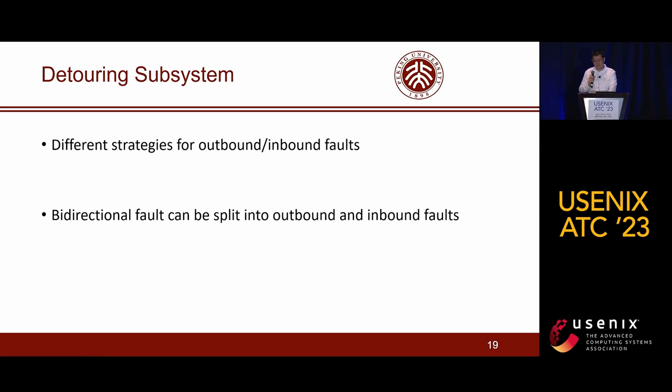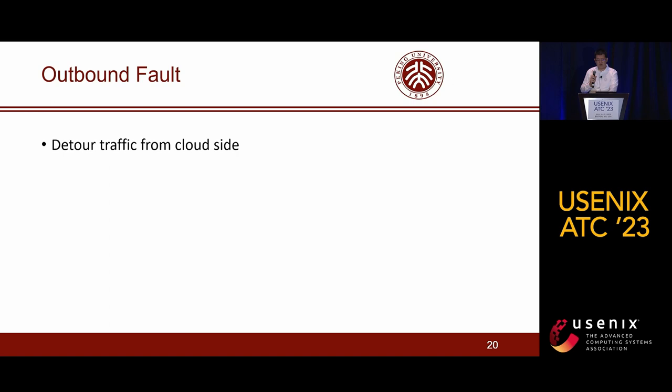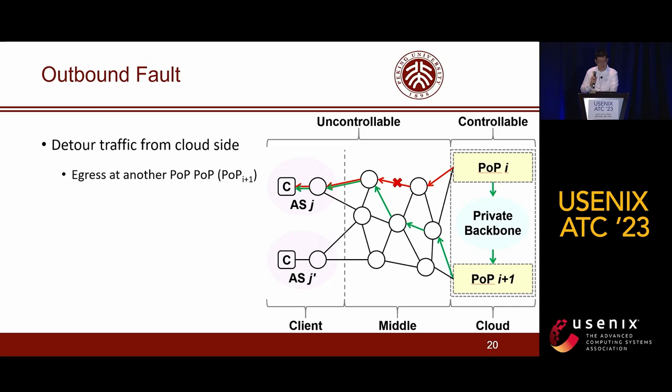The third subsystem is the detouring subsystem. AutoArcical Appeals employs different strategies to circumvent outbound and inbound faults. In the case of a bidirectional fault, AutoArcical Appeals circumvents it by splitting it into an outbound fault and an inbound fault. To circumvent outbound faults, the subsystem detours victim traffic from the cloud side. As shown on the slide, the detouring subsystem makes the victim traffic egress at another POP to circumvent the outbound fault. Suppose POPi reports the fault.